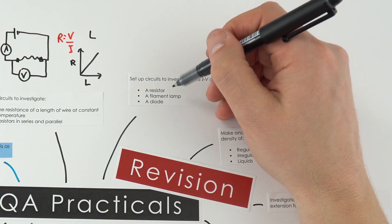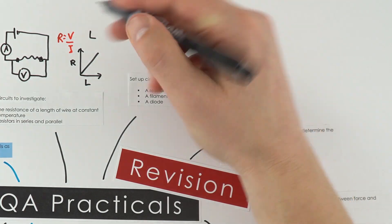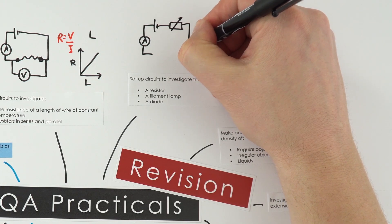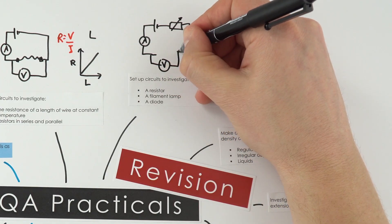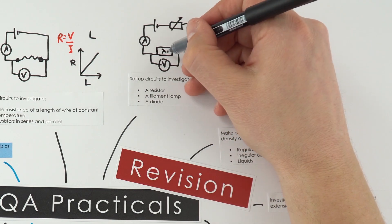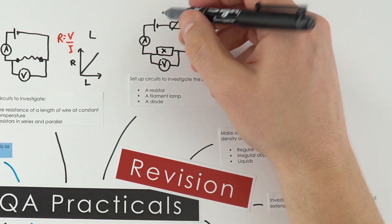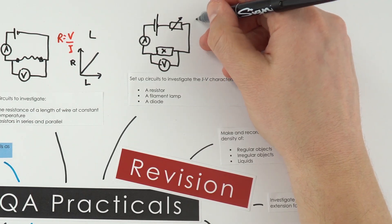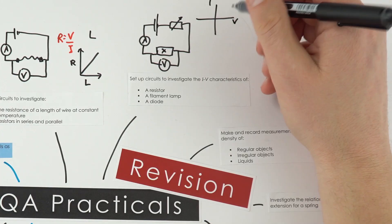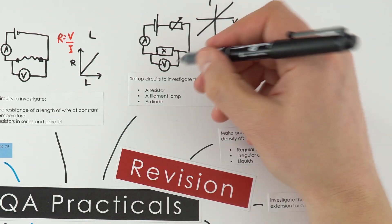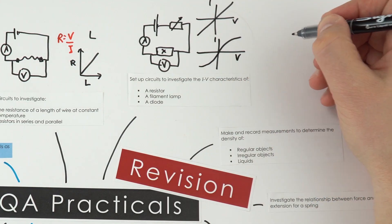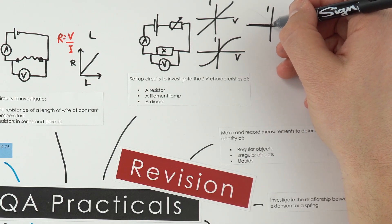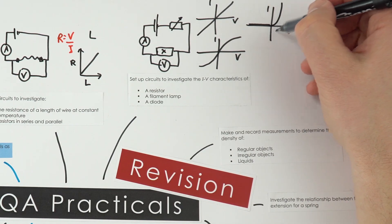To investigate IV characteristics of resistors, lamps, and diodes, use a similar circuit with a variable resistor to change the current and potential difference across the component. Take readings with positive current and positive potential difference, then swap the cell direction for negative values. A resistor gives a straight line through the origin, a filament lamp curves as resistance changes, and a diode shows near-zero current one way then rises steeply the other — though this one is difficult to get readings from.